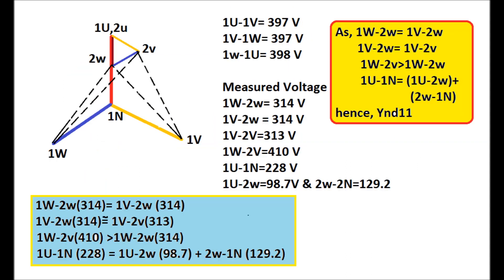The criteria for YND11 differ slightly from YND1. Number 1 — voltage between 1W and 2W must equal voltage between 1V and 2W. Number 2 — voltage between 1V and 2W must equal voltage between 1V and 2V. Number 3 — voltage between 1W and 2V must be greater than voltage between 1W and 2W. Number 4 — voltage between 1U and 1N must equal the sum of voltage between 1U and 2W plus voltage between 2W and 1N.